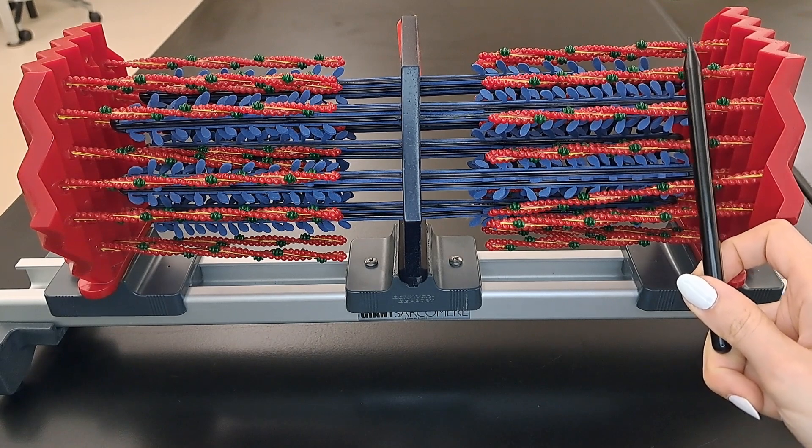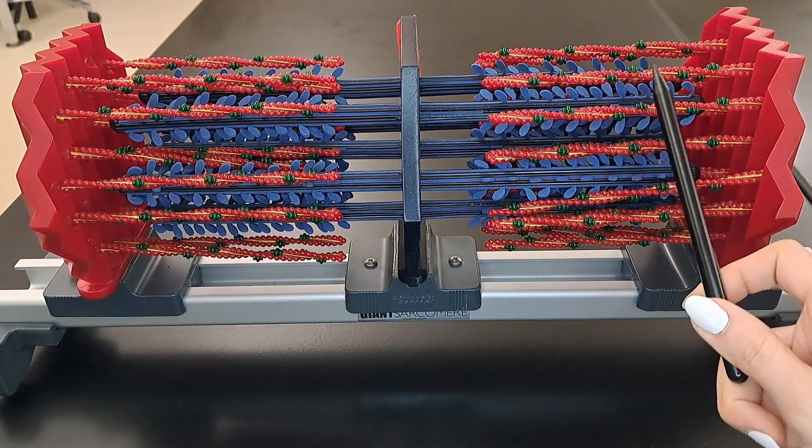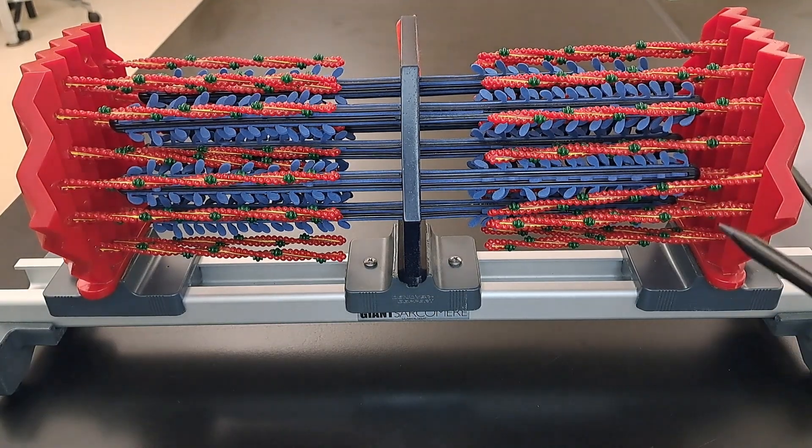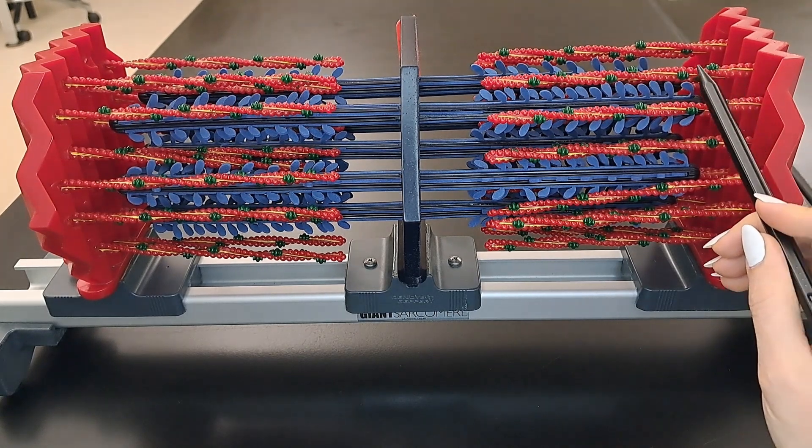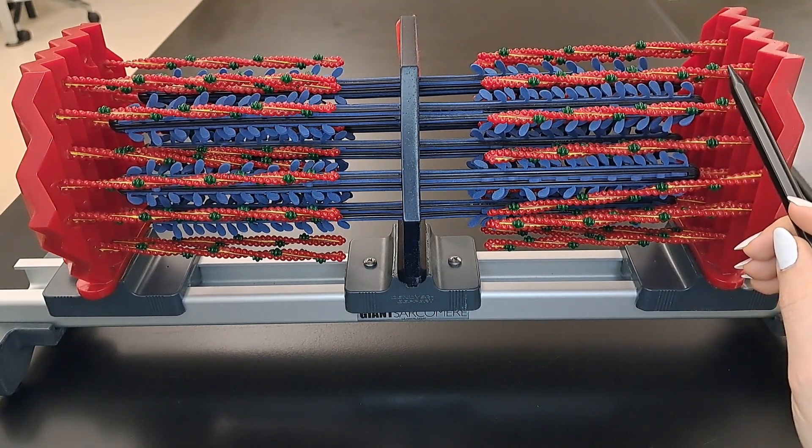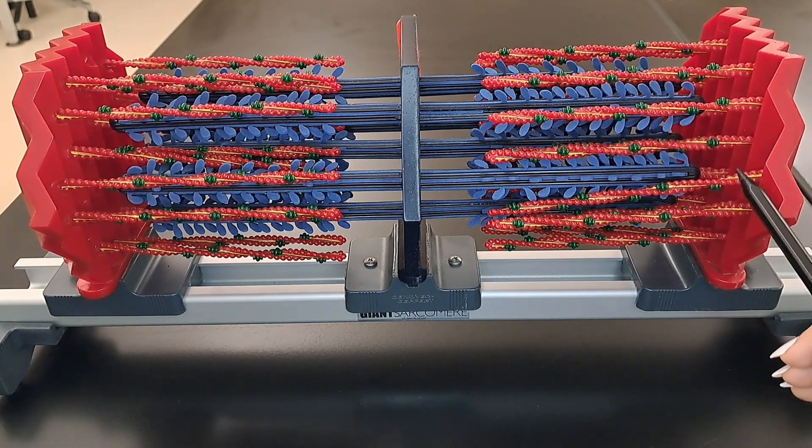The A band also contains the thin and the thick filaments together. Whereas the I band, this is part of the I band on this side. The I band only contains the thin filaments.